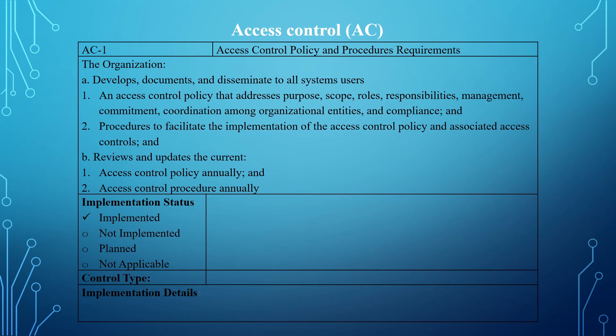Looking at the lower section on implementation details, the implementation statement is a summary showing how the control was implemented. It provides detailed information on how each control was implemented and is documented in this section. If the control is not implemented, you must provide a reason why. If the control is planned, you provide the reason why it is planned. If the control is not applicable, you document the reason why it is not applicable.